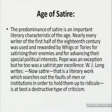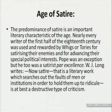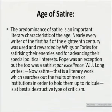W.J. Long writes that satire — a literary work which searches out the faults of men or institutions in order to hold them up to ridicule — is at best a destructive type of criticism. It had a negative dimension to it. The restoration literary movement, having its impact upon the Augustan age, we find were extremely varied — with philosophical, political, or sexual elements. Pastoral literature was somehow present during the restoration, but the Augustan age focuses not on country life.